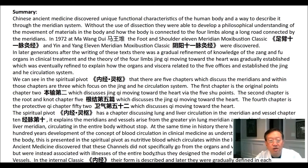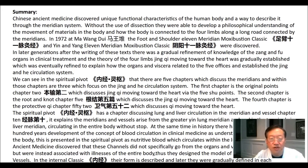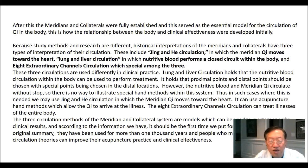At the same time in history, there had already been a several hundred year development of the concept of blood circulation and clinical medicine as understood as a closed circuit in the body. This is presented in the spiritual pivot as nutritive blood which circulates within the lung and liver circuit. Ancient medicine discovered that these channels did not specifically go from the organs and viscera to the extremities, but were instead associated with illnesses of the entire body. Thus, they designed the model of the eight extraordinary vessels. Historical interpretations of the meridians and collaterals have three types of circulation: jing and he circulation (meridian qi moves toward the heart), lung and liver circulation (nutritive blood performs a closed circuit), and eight extraordinary channel circulation.